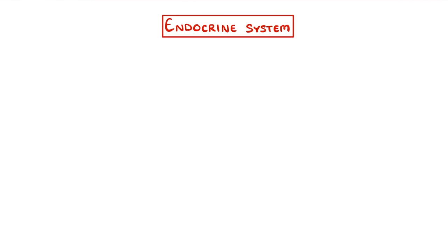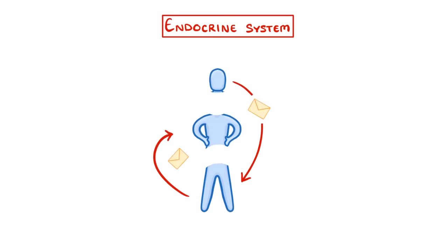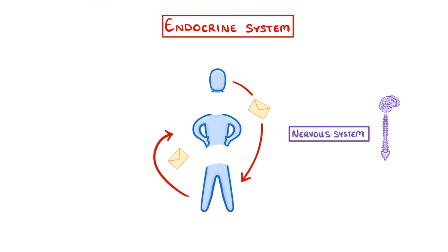In this video, we're going to discuss the endocrine system, which allows different parts of our body to communicate with each other. You might notice that this is basically the same job as the nervous system, which it kind of is, but there are lots of differences between the two, and we'll explore these as we go through the video.